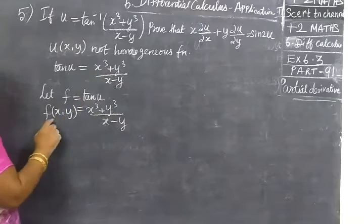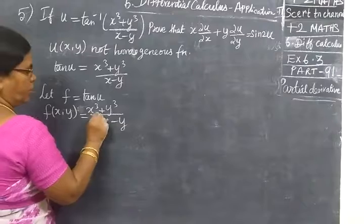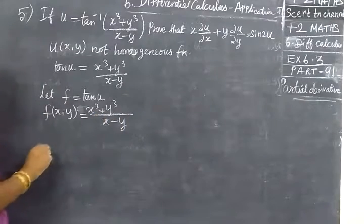Now we define f of xy. Now u or f of xy is given, x cube plus y cube by x minus y is given. Now we have the homogeneous function.